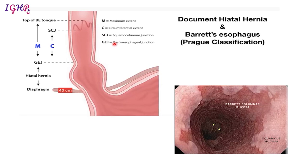The forms accompanying a Barrett's esophagus will often mention the Prague classification, where the endoscopist writes about the M and C categories. M is the maximum extent of Barrett's — from the gastroesophageal junction to the upper limit of the squamocolumnar junction — and C is the circumferential extent, the areas circumferentially involved by the squamocolumnar junction.